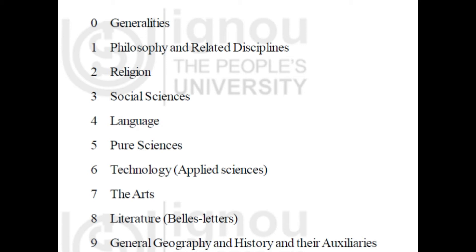0 is for Generalities, 1 is for Philosophy and Related Disciplines, 2 is for Religion, 3 is for Social Science, 4 is for Language, 5 is for Pure Science, 6 is for Technology, 7 is for Arts, 8 is for Literature, and 9 is for Geography and History.